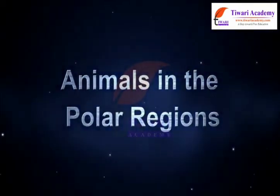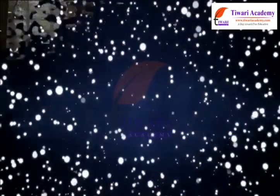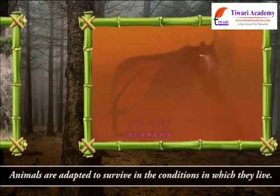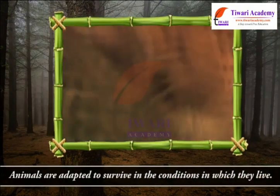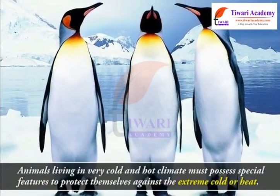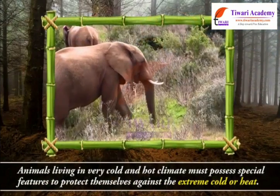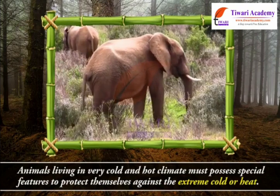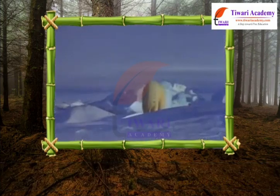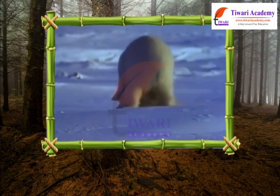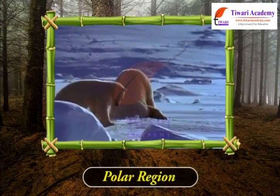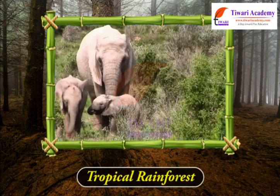Animals in the polar region: climate has a profound effect on all living organisms. Animals are adapted to survive in the conditions in which they live. Animals living in very cold and hot climates must possess special features to protect themselves against extreme cold or heat. As examples of adaptation of animals to climatic conditions, we will discuss animals living in polar regions and tropical rainforests.